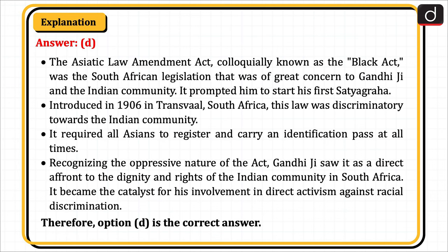Introduced in 1906 in Transvaal, South Africa, this law was discriminatory towards the Indian community. It required all Asians to register and carry an identification pass at all times. Recognizing the oppressive nature of the Act, Gandhiji saw it as a direct affront to the dignity and rights of the Indian community in South Africa. It became the catalyst for his involvement in direct activism against racial discrimination. Therefore, option D is the correct answer.